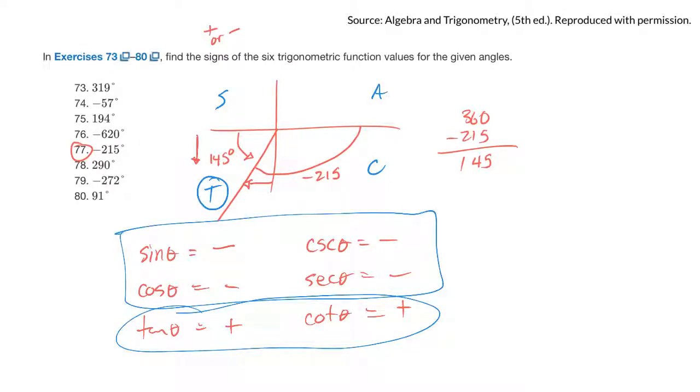I typically like to think sine and y go together. So if I'm below the axis, y is negative, also sine has to be negative. Cos, I think x. And so if the x value over in this quadrant is negative, then cosine also has to be negative. That's how I think about it.